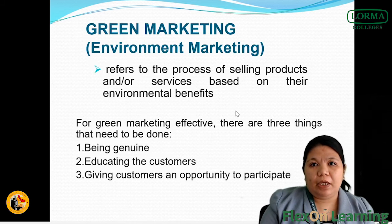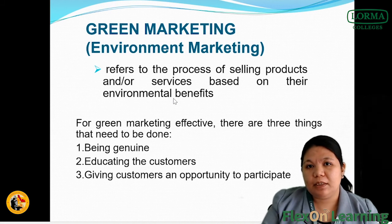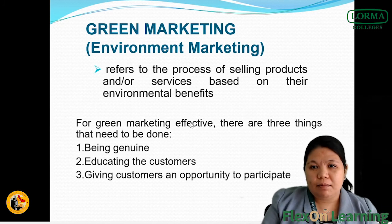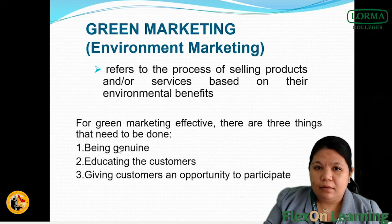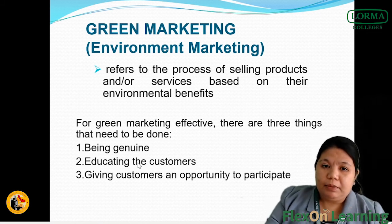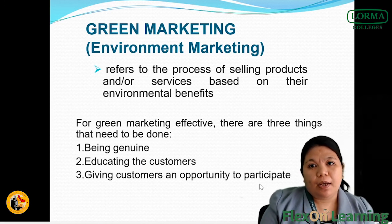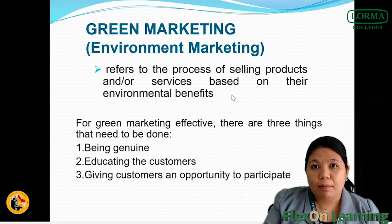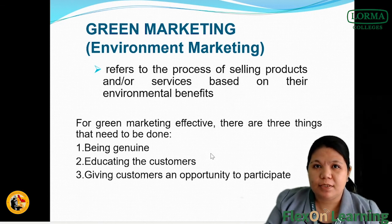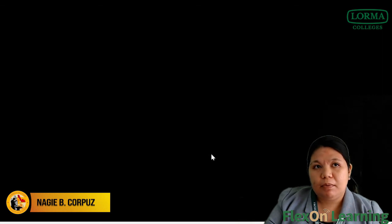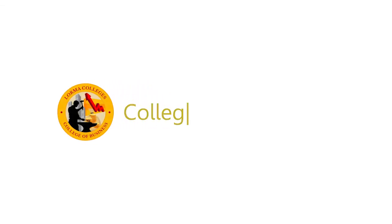Last is green marketing, or environmental marketing. It refers to the process of selling products or services based on their environmental benefits. For green marketing to be effective, three things need to be done: being genuine, educating the customers, and giving customers an opportunity to participate. One example is the Ecobag, which is used to protect the environment from plastic use. And that ends the topic on chapter one about marketing principles and strategies.